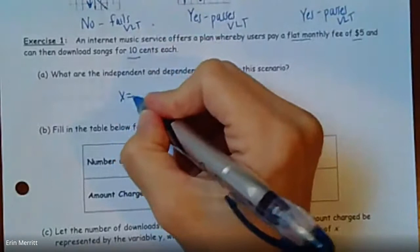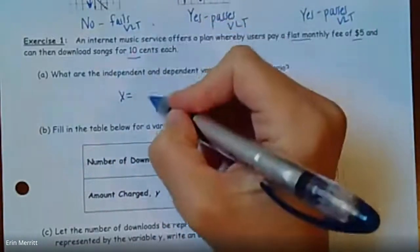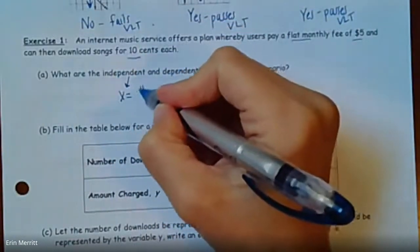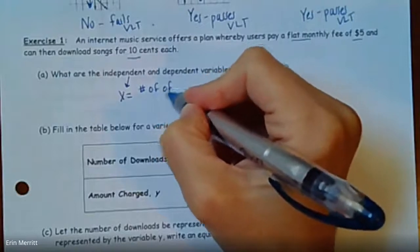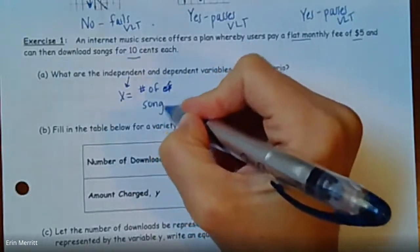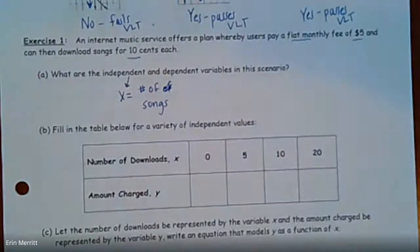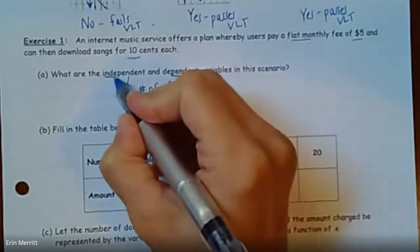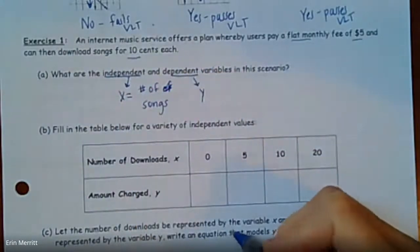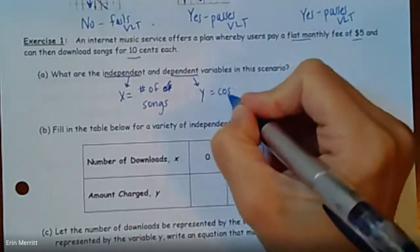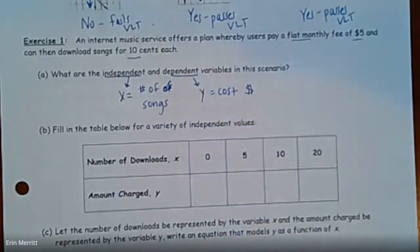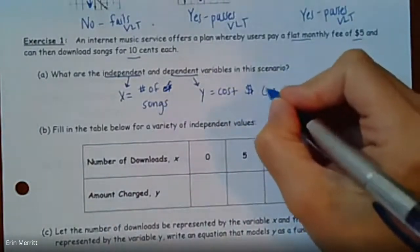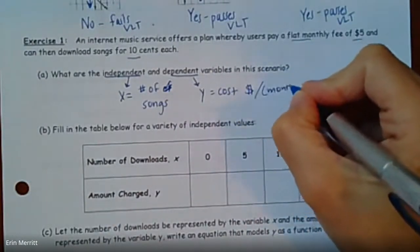When it's saying, what are the independent and dependent variables in the scenario? Well, you got to think, we're talking about how much music you can purchase and then the cost. So in this case, the X or the independent should be the number of songs that you can actually purchase. And then the dependent, that's the Y value, that's going to be how much it costs you. So the cost or the money per month.